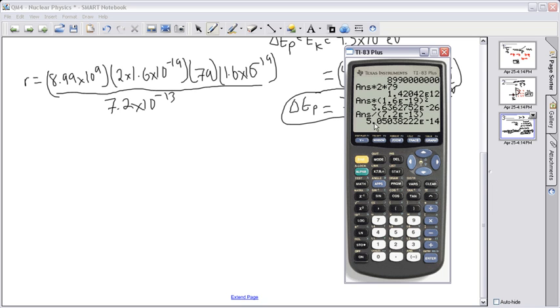If I do that, I end up with 5.05 times 10 to the minus 14. I'm going to allow two significant figures, so it will be 5.1 times 10 to the minus 14.